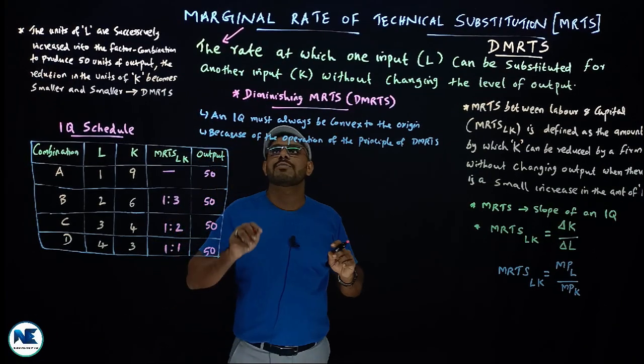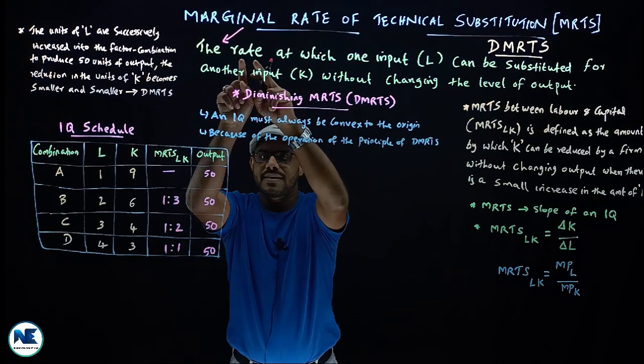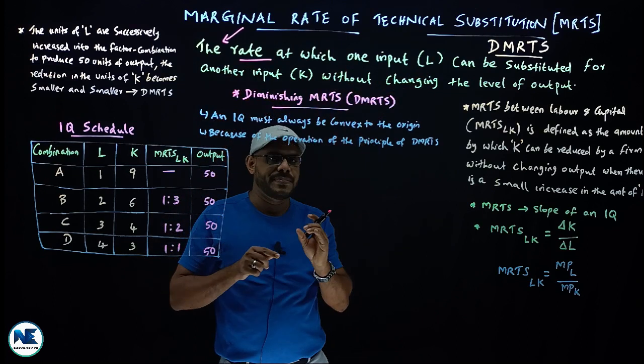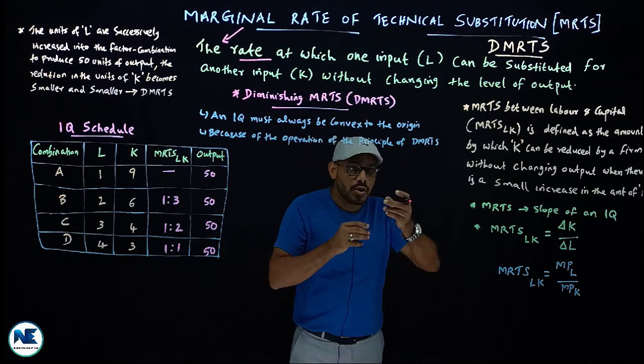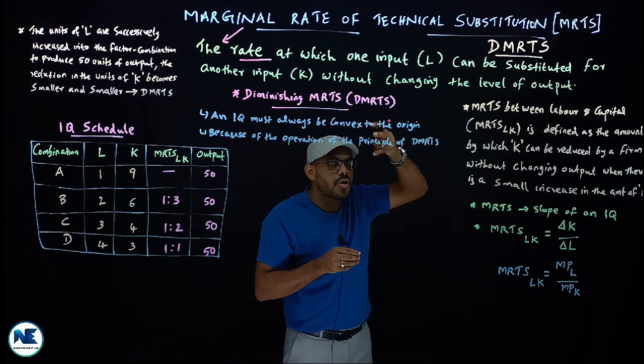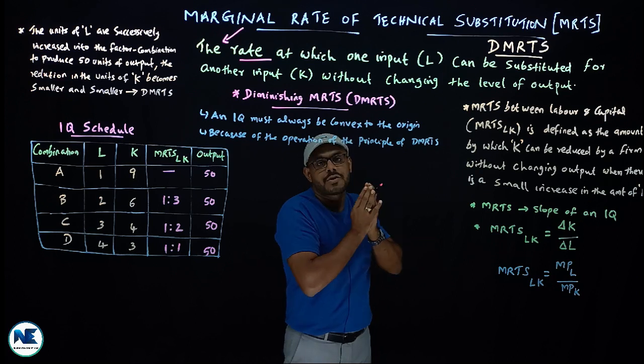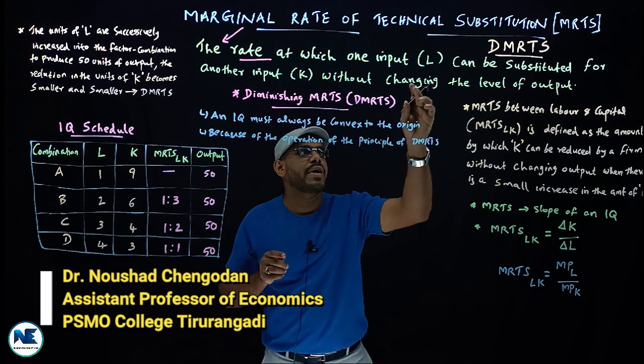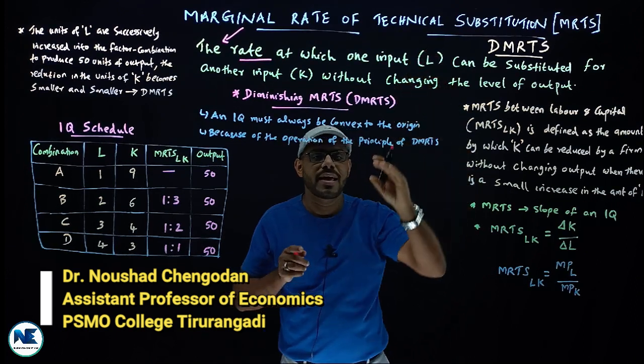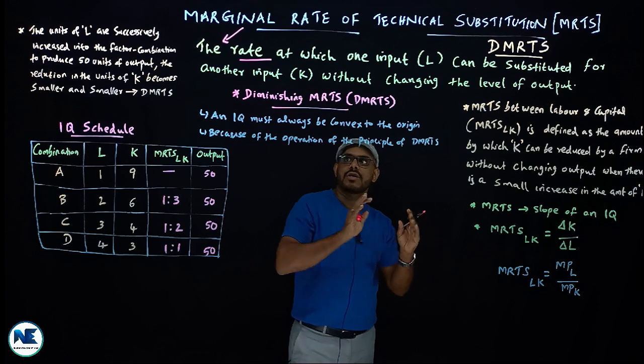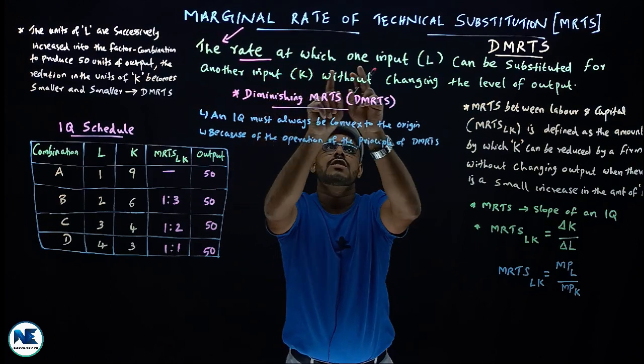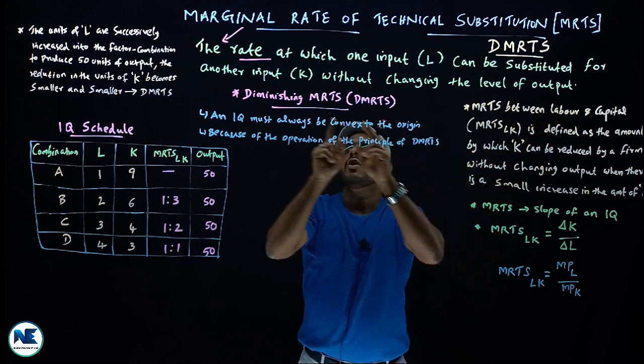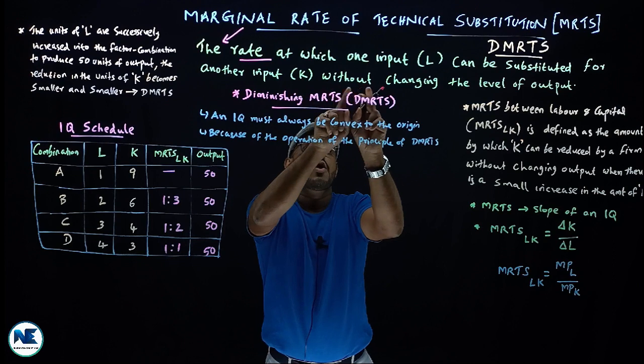Marginal rate of technical substitution is the rate at which one input, represented by isoquant combinations of two factors of production, labor and capital. MRTS is the rate at which one input can be substituted for another input, capital, without changing the level of output.